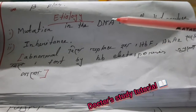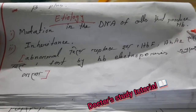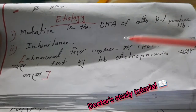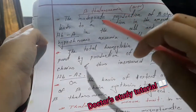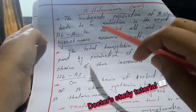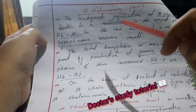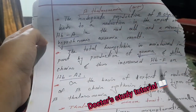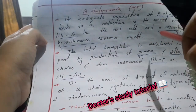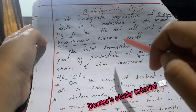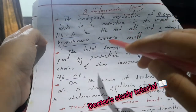The etiology of thalassemia involves mutation of DNA in the cells that produce hemoglobin, and is inherited. Beta thalassemia is defined by inadequate production of the beta chain, leading to reduction in the amount of Hemoglobin A in the red cell, resulting in a microcytic hypochromic anemia. This condition is called beta thalassemia.